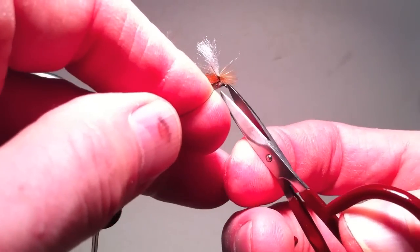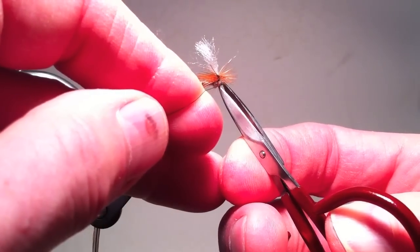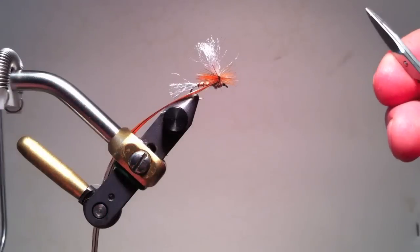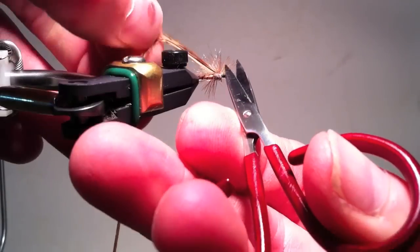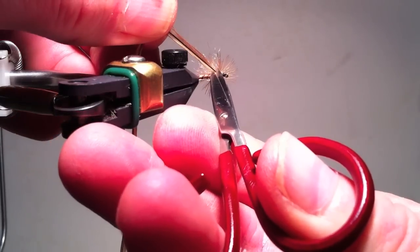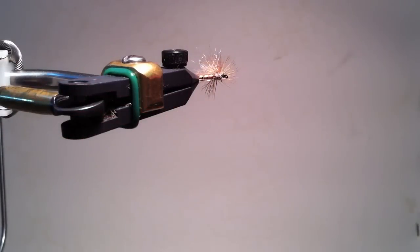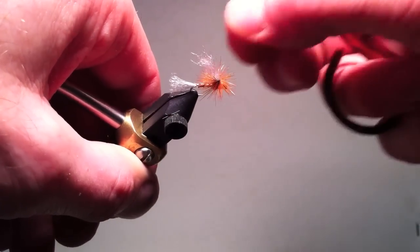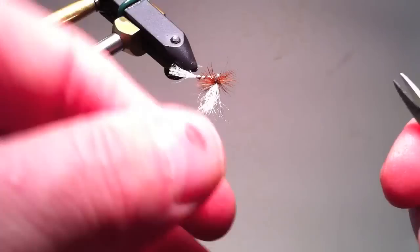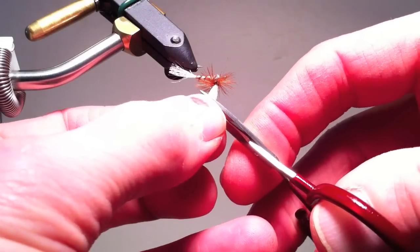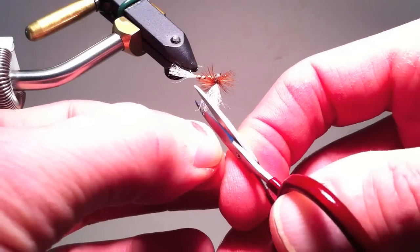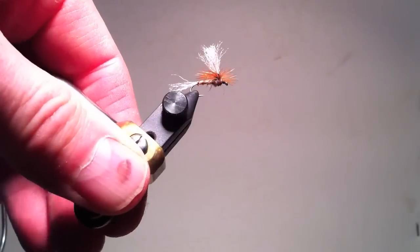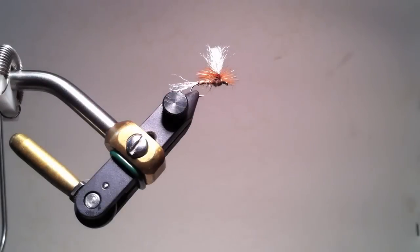Once the head is tied off, I clip the thread, turn the fly towards me so I can clip off the excess hackle without clipping the hackle fibers, redistribute the hackle fibers as needed, and then once again put the fly upside down using the rotary vise techniques to trim the wing to the height and shape that I want. And that's the finished quad.